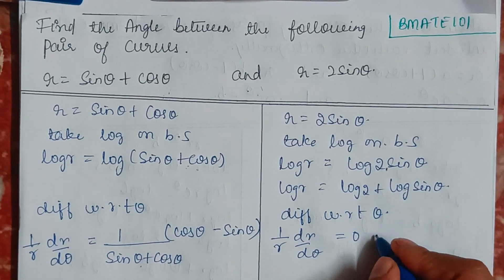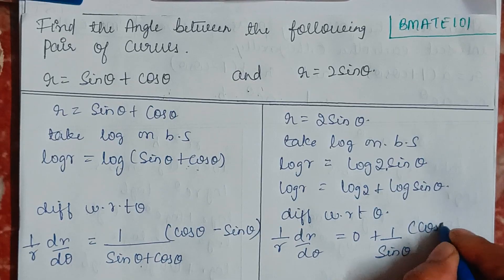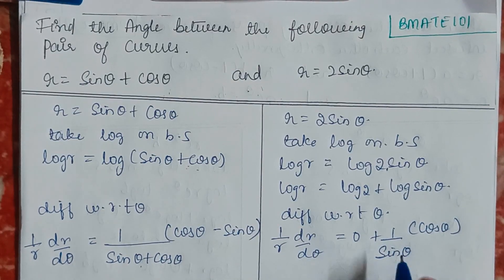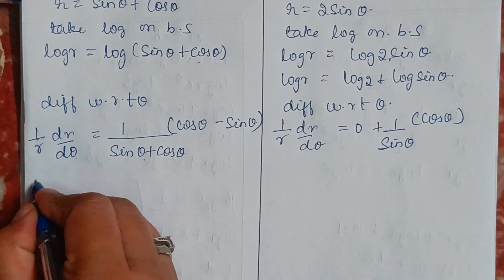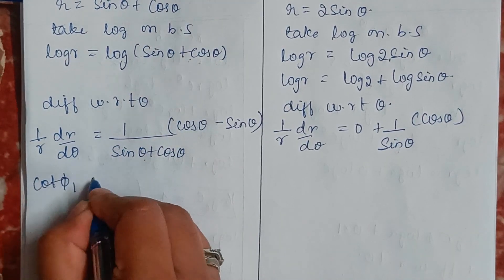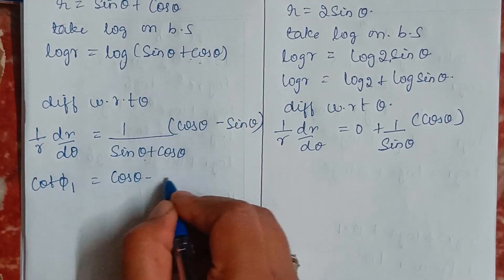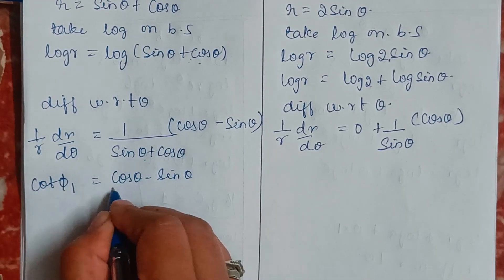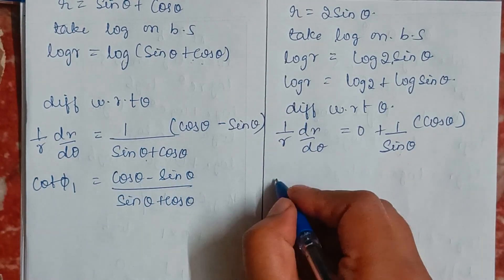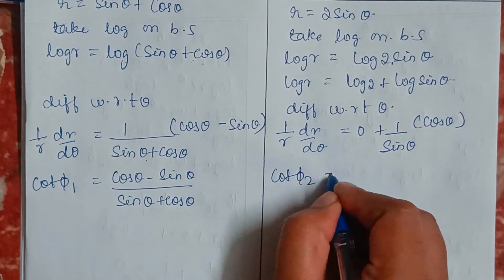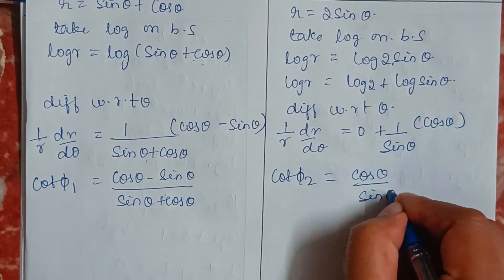This gives us cot φ₁ = (cosθ − sinθ)/(sinθ + cosθ), and cot φ₂ = cosθ/sinθ.